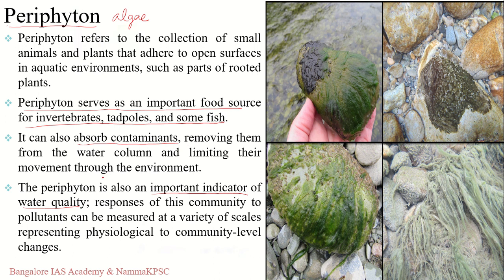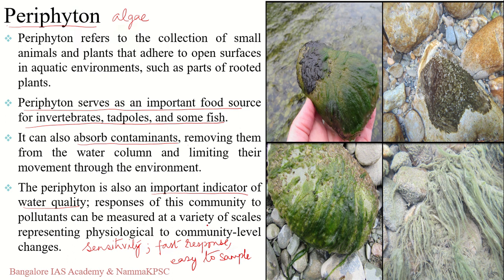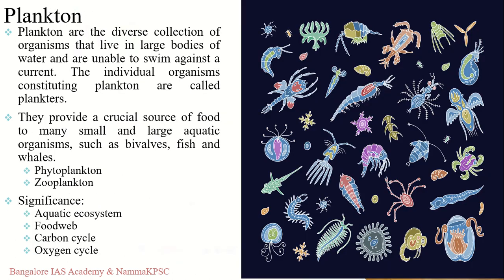Periphyton acts as an indicator of water quality for three reasons: first, it is known for its sensitivity to change; second, it has a very fast response to change; and third, it is easy to sample. In aquaculture, periphyton communities are also used as a filtering system to remove solid and dissolved pollutants.